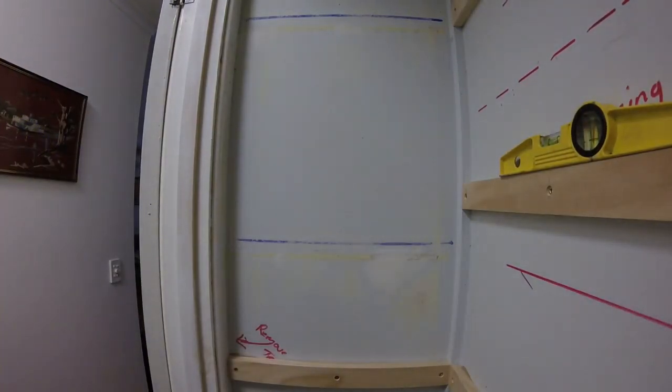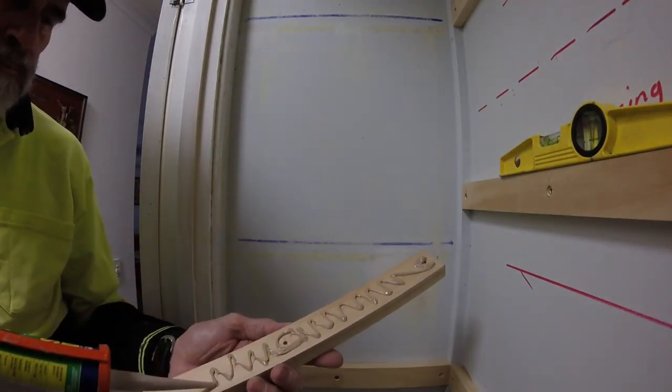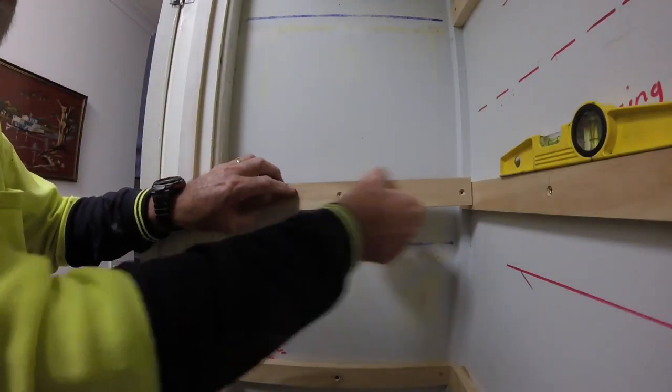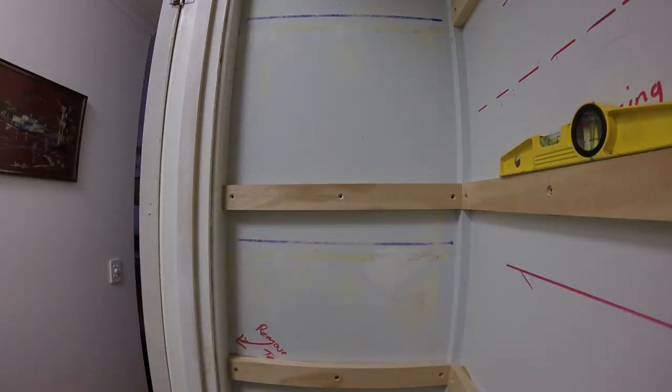With the back wall supports in position I then fit the supports to the side walls referencing the back wall supports and leveling off the corresponding ends of the back wall supports as required.